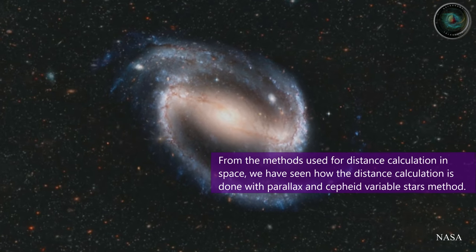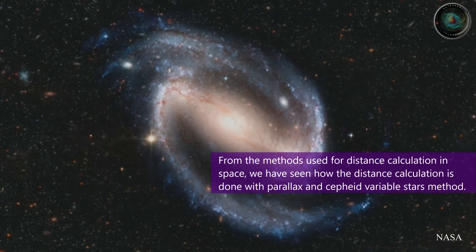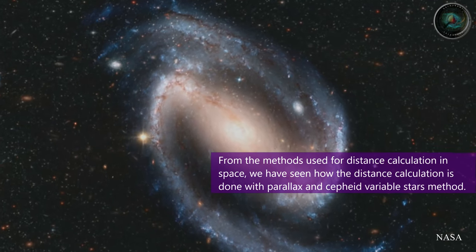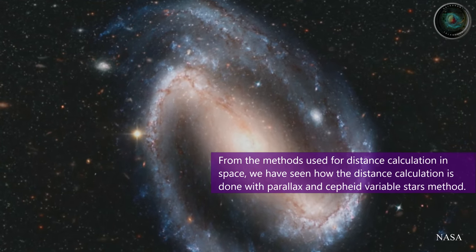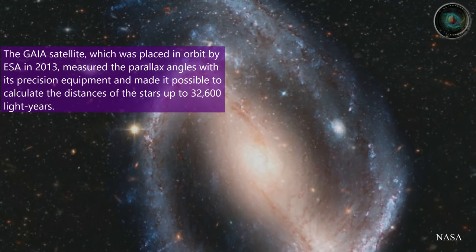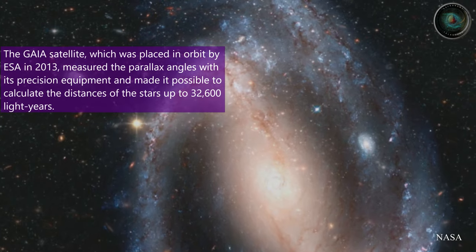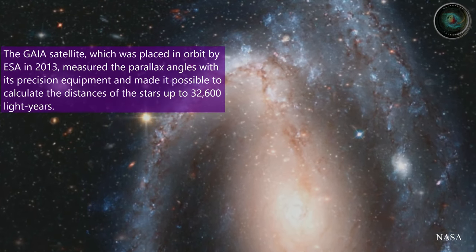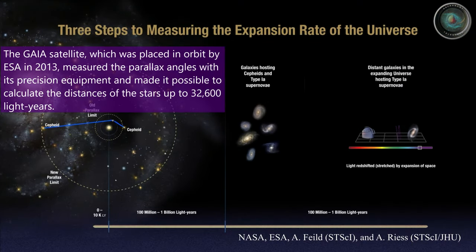From the methods used for distance calculation in space, we have seen how the distance calculation is done with parallax and Cepheid variable stars method. The Gaia satellite, which was placed in orbit by ESA in 2013, measured the parallax angles with its precision equipment and made it possible to calculate the distances of stars up to 32,600 light-years.